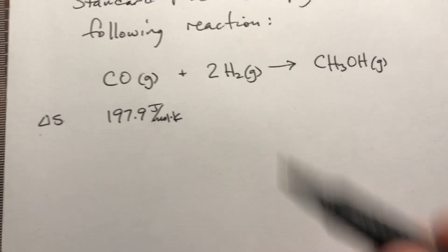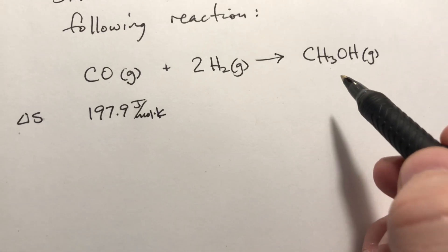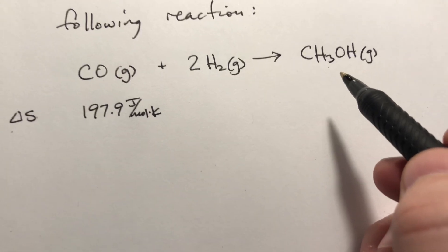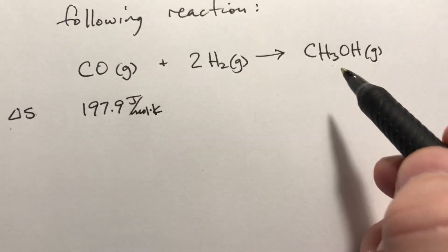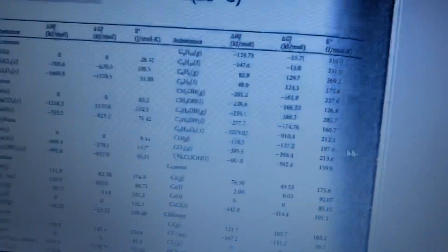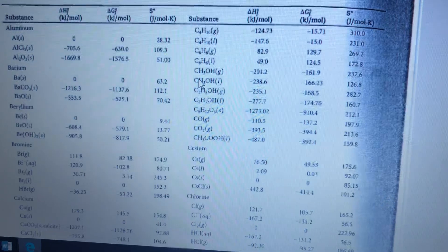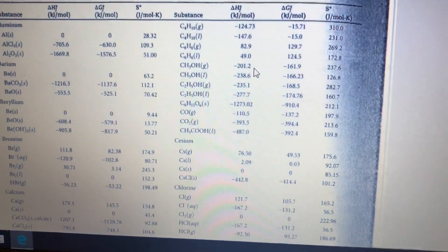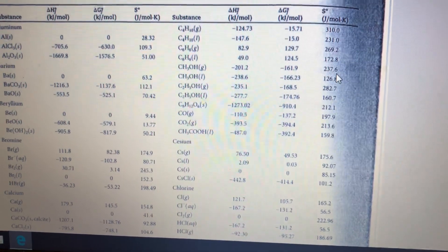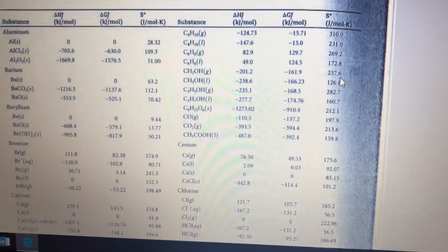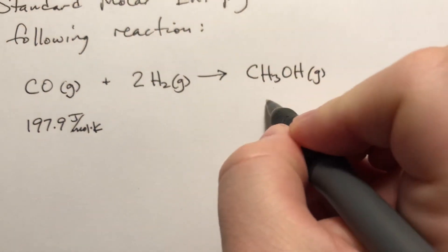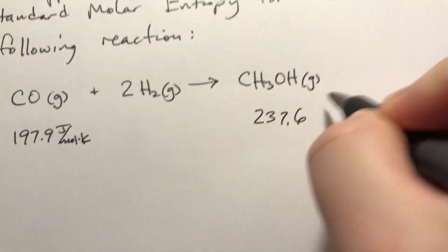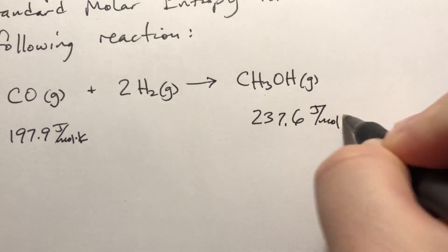I'm going to look up this one next, because we're already in the carbon section of the table. CH₃OH, which is methanol as a gas—we have ΔH, ΔG, and S—it's 237.6 joules per mole Kelvin.